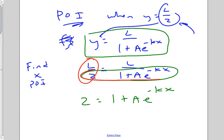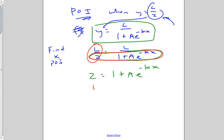So we just need to set the denominator as equal. And we have 1 equals A times e to the negative kx.